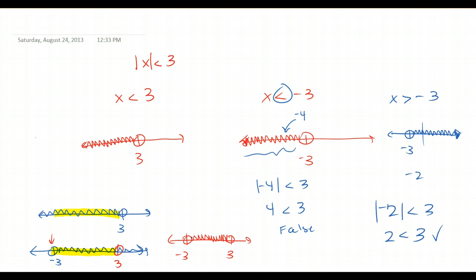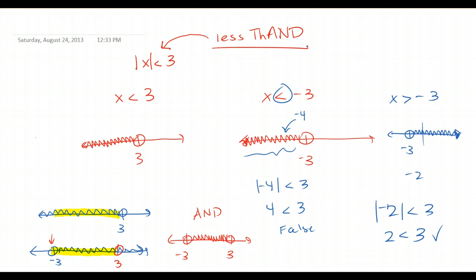You notice it ends up looking like an 'and' inequality — that's the mnemonic. Whenever you see a less than symbol, it's going to turn into an 'and' problem. Your graph will have values falling in between your smallest and your largest value.